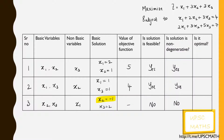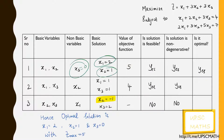Since the objective function is maximum at z = 5, that is the optimal solution. Hence the optimal solution is obtained at x1 = 2, x2 = 1, and x3 = 0, with z_max = 5.